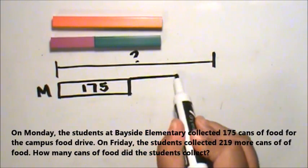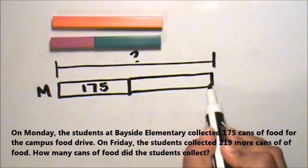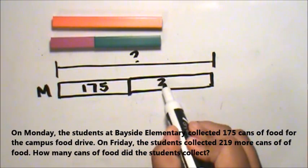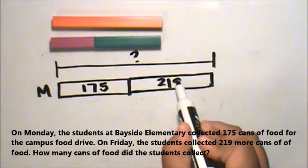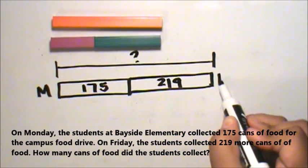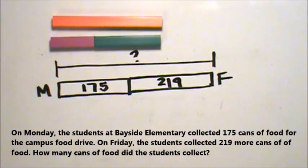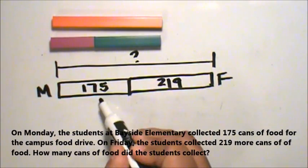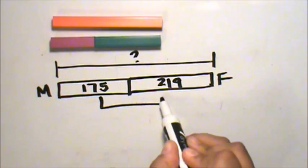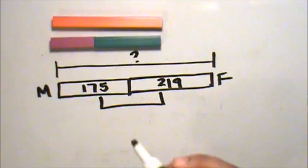Then I draw the 219 cans that were collected on Friday. I write my quantity and I label it. Then I use a bracket or an arrow to show that I joined both parts to find the whole.